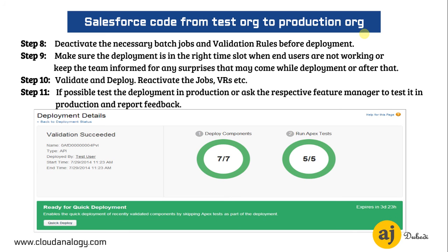Step 8: Deactivate the necessary batch jobs and validation rules before deployment. If they are active and colliding with the same object and code, they won't allow your code to be deployed in production. Step 9: Make sure that deployment is in the right time slot, when end users are not working.